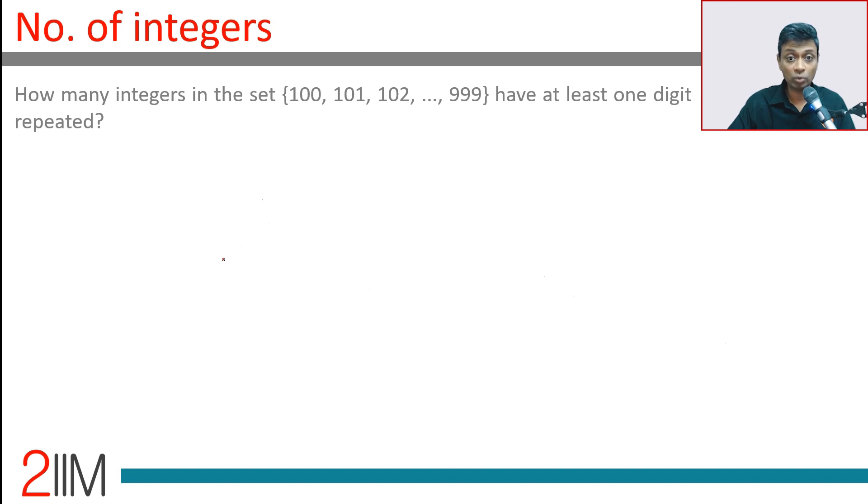How many integers in the set 100, 101, 102, all the way to 999 have at least one digit repeated? The classic kind of question where you are asked for A, finding A complement makes life easy.